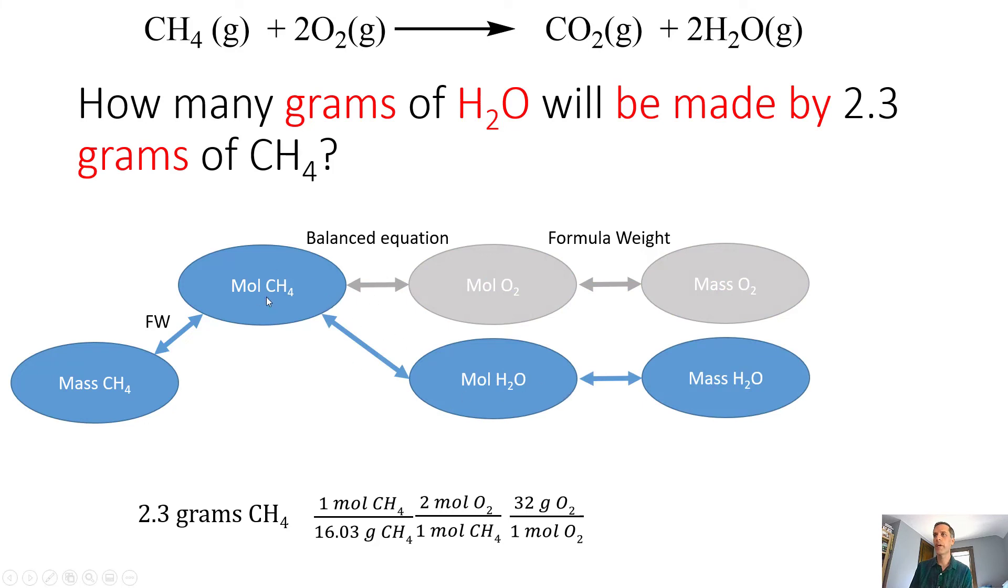Now we need to go from moles of methane to moles of water. The way that we do that is still going to be that balanced equation. Then going from moles of water to mass of water, that's going to be our formula weight. We've created just a slightly altered path. In terms of the math, we start with our methane, we do that same conversion here. Now the relationship we need goes from moles of methane to moles of water. We go to the balanced equation and use that same piece. We then add in the formula weight of water, make sure that everything cancels out really nicely, do the calculation, and we can get to an answer.